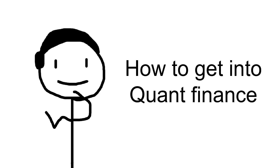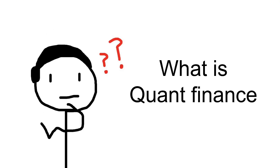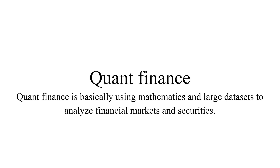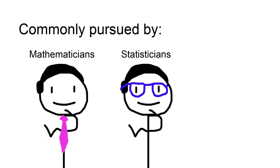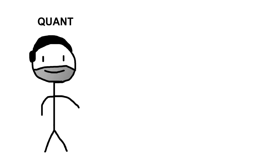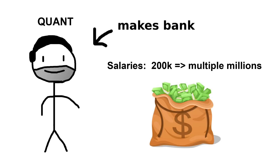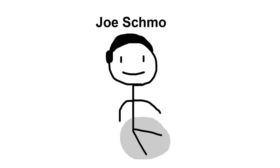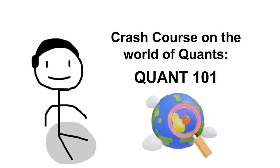How to get into Quant Finance. The TLDR is that quant finance is basically using mathematics and large data sets to analyze financial markets and securities. It's a career commonly pursued by mathematicians, statisticians, and those with computer science backgrounds for one main reason: quants make bank. With starting salaries from $200,000 to quants making millions of dollars each year, it's definitely one of the most lucrative careers out there. Here's a crash course on the world of quants.